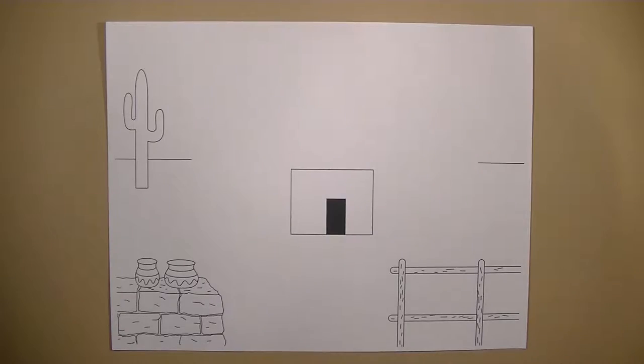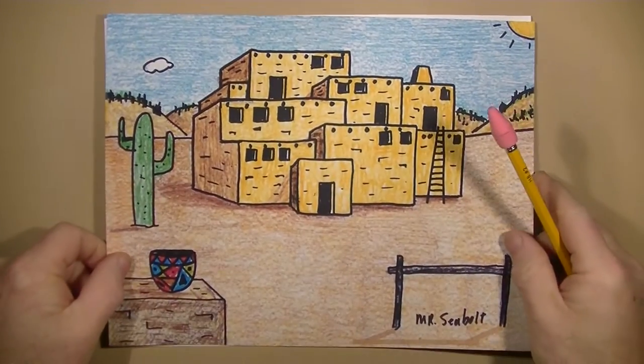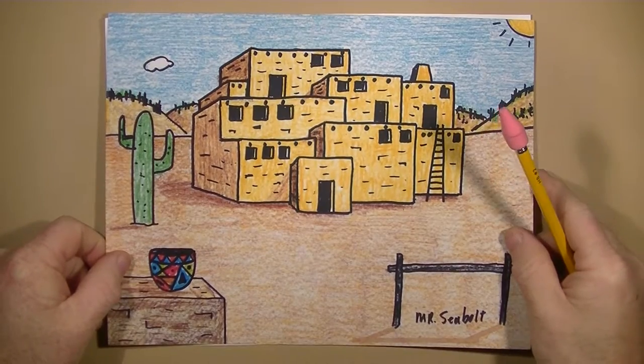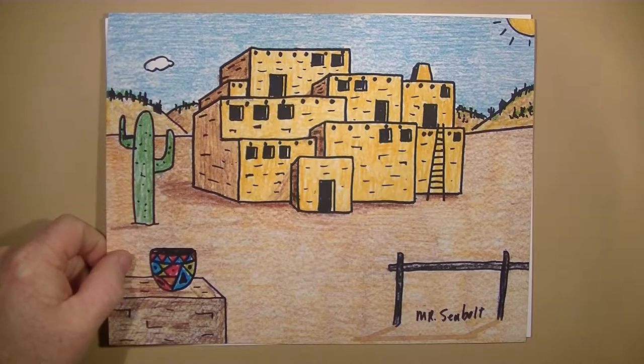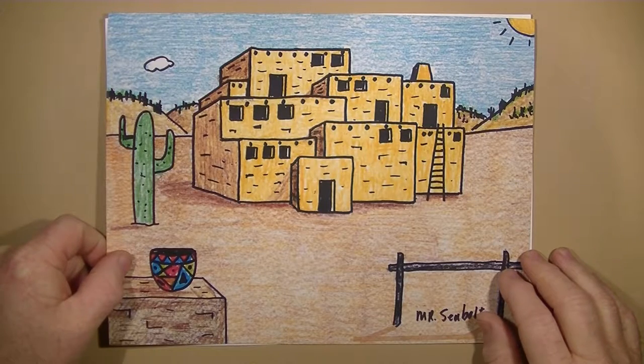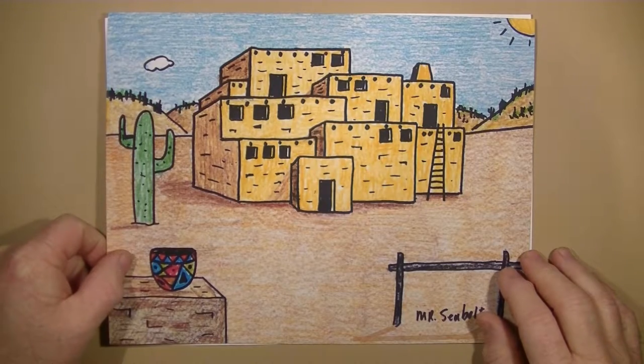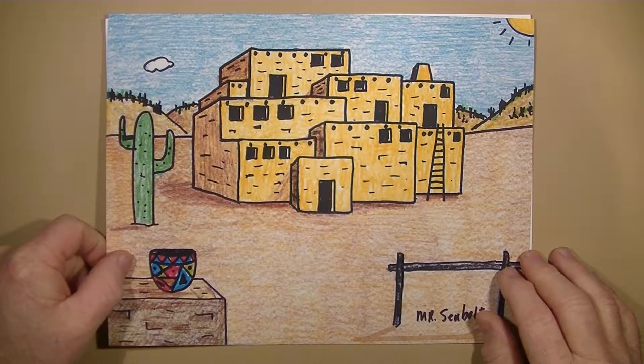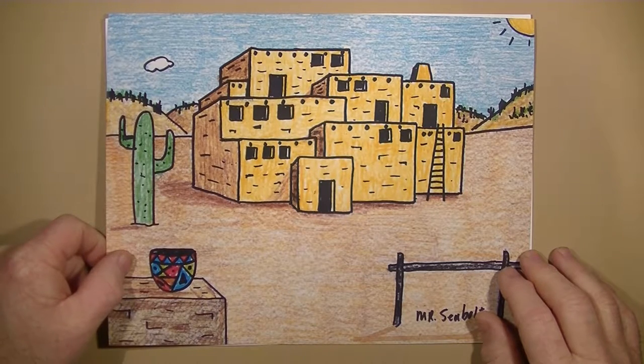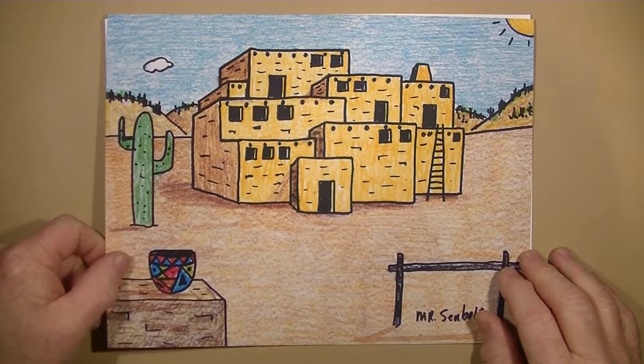The picture we're going to do today is of a Pueblo house. This is the kind of structure that Pueblo Indians in the southwest part of the country lived in and still do in many cases live in. Arizona, New Mexico, out in areas like that.